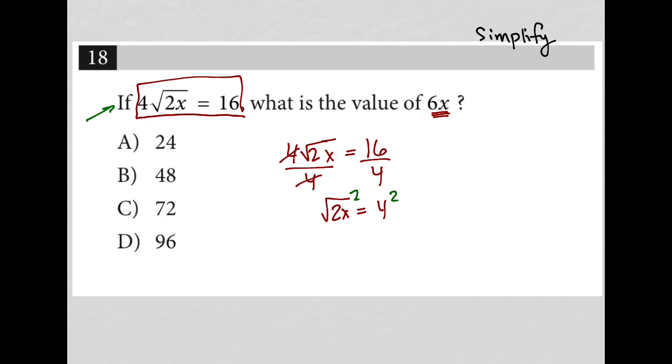So the square root of 2x to the second power is just going to be 2x. This cancels that out effectively. And then I have 4 squared, which is equal to 16. And then I can divide both sides by 2, and I'm left with x is equal to 8.